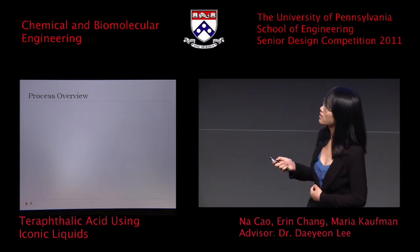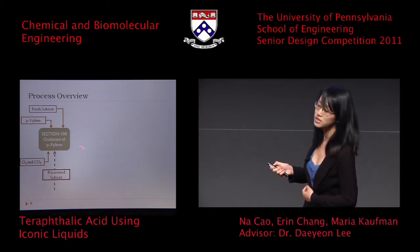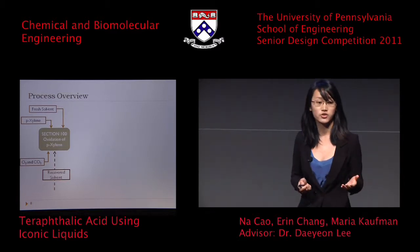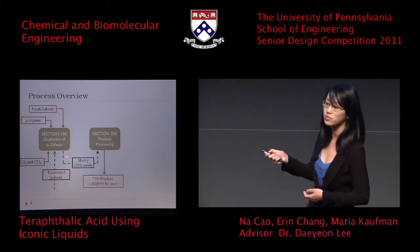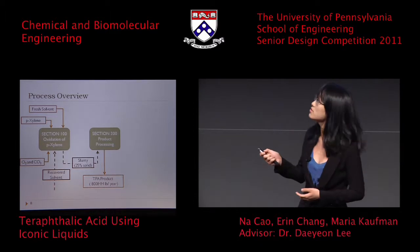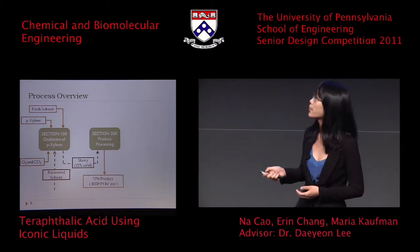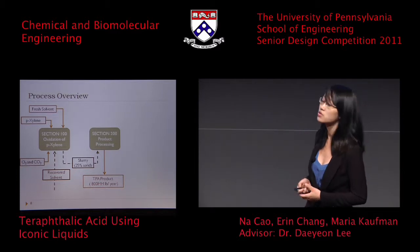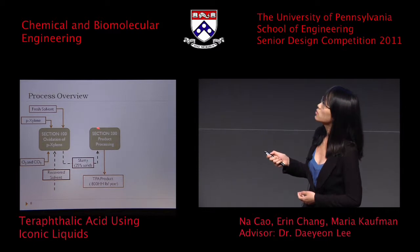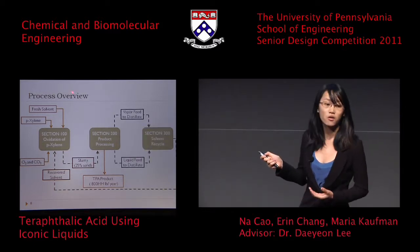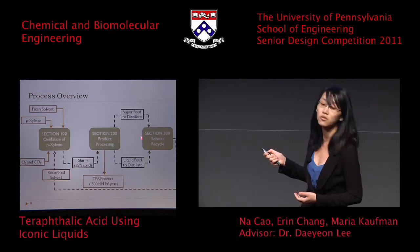Our process is divided into three parts. Section 100 deals with the oxidation reaction from paraxylene to TPA. From this reaction, we get about 25% solid TPA that goes into Section 200 for product processing and recovery, where we produce around 800 million pounds per year of TPA. Section 300 deals with solvent recovery and recycle to save money on our solvent.